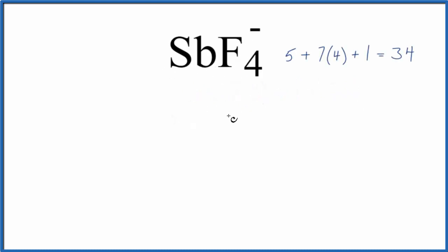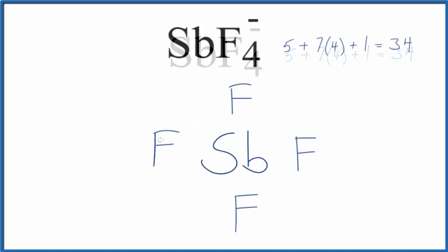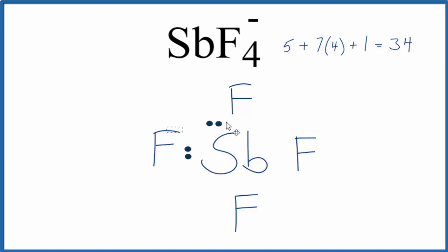Sb is the least electronegative, so we'll put that in the center and then put the fluorines around the outside. Next we'll put electrons between the atoms to form the chemical bonds — placing electrons between each fluorine and the Sb, the antimony.